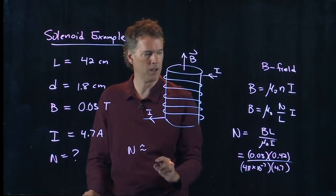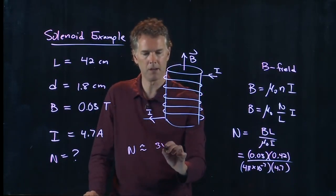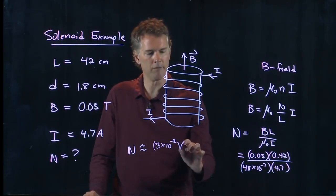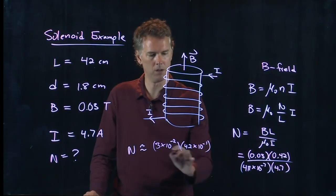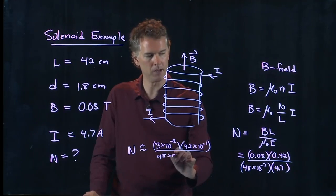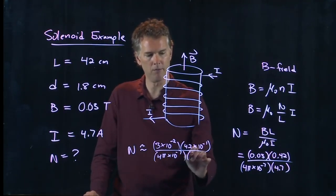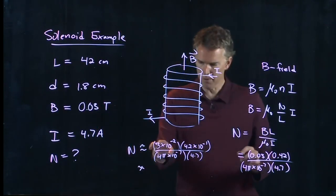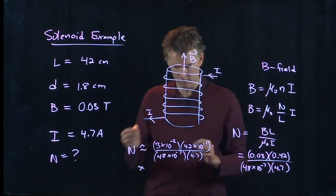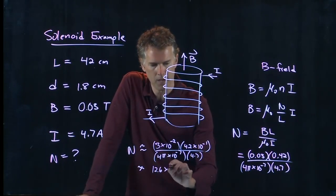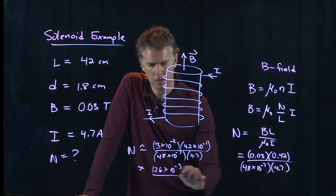Somebody punch those into your calculator, tell me what you get and I will approximate it here. So we've got 3 times 10 to the minus 2 and then we've got a 4.2 times 10 to the minus 1, and we're going to divide by 4π times 10 to the minus 7 and then we have another 4.7.